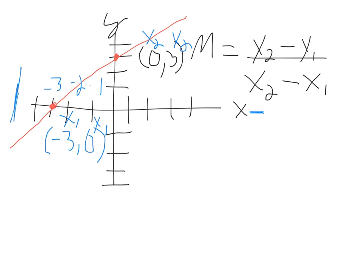I'm going to come over here and say M equals y2—and so this is y2, so I'm going to plug that in: 3 minus y1, which is 0, so I'm going to plug that in. Then x2 is right here, so that's 0, I'm going to plug that in, minus x1, which is right here: minus negative 3.